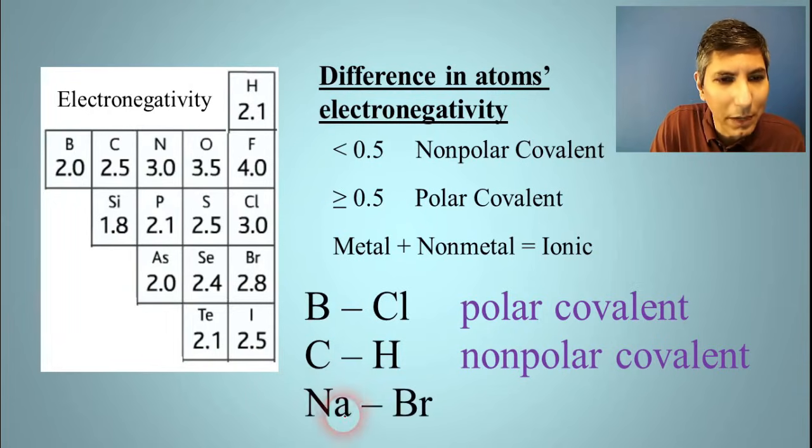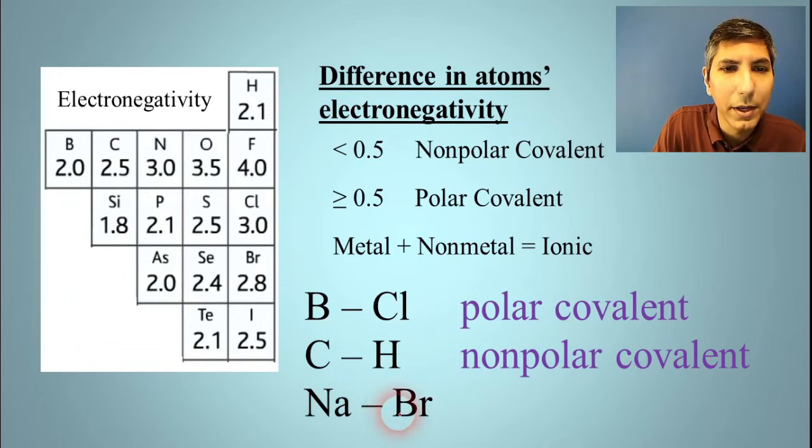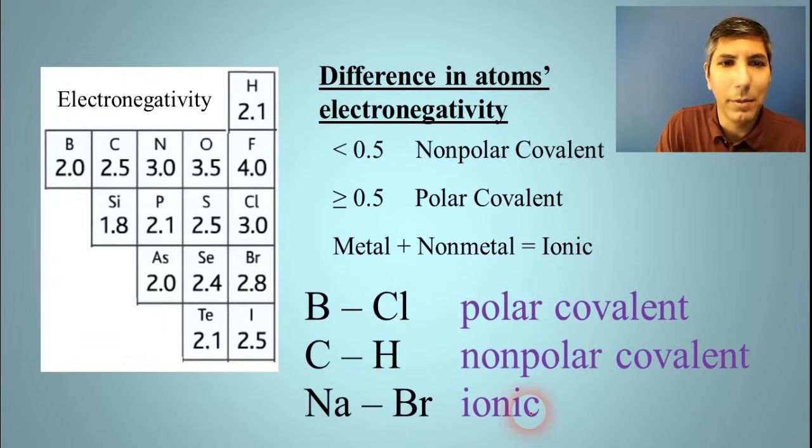Now, how about sodium and bromine? Well, notice that sodium is not on the chart at all, because sodium is a metal. You can see that on your copy of the periodic table. So this is a metal and a nonmetal, so we're going to call that ionic. And in ionic chemical bonds, the metal is generally transferring those electrons to the nonmetal.